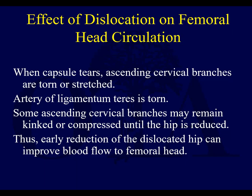When you dislocate the femoral head from the joint, the capsule tears, and the ascending cervical branches are torn or stretched. Clearly the artery of the ligamentum teres is going to be gone, but it's maybe not that important in the adult. With a native hip dislocation, the femoral head is completely out of position, and those ascending cervical branches can become kinked or compressed. That's why you need to get these reduced right away — if vessels are present but just kinked and compressed, reducing the hip can potentially help to restore blood flow to the femoral head.